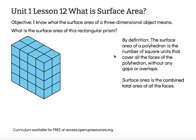Another way to think about surface area is that it is the combined total area of all the faces. You can find the area of each face and then combine all those areas together to get the surface area.